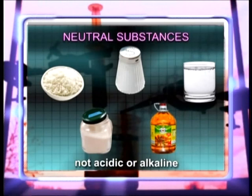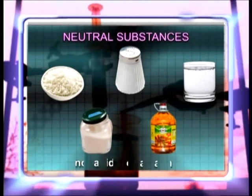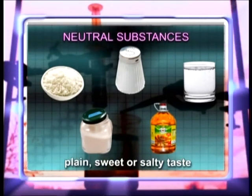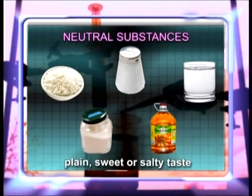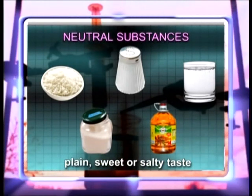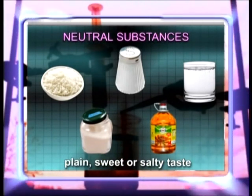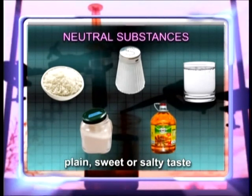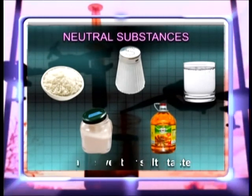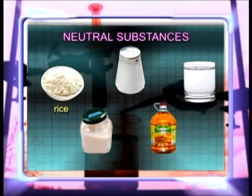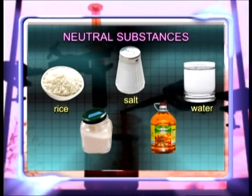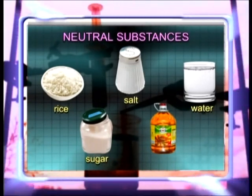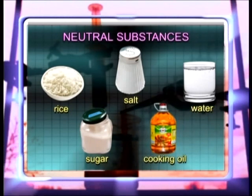All other substances that are not acidic or alkaline are grouped as neutral substances. Neutral substances have a plain taste, sweet taste, and salty taste. Examples of neutral substances are rice, salt, water, sugar, and cooking oil.